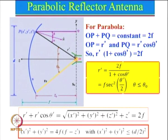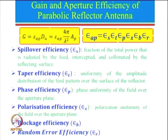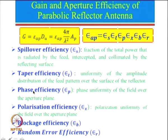In reflector antenna design, most of the time the design considerations govern spillover and taper efficiency, while fabrication tolerances directly govern the values of phase efficiency (epsilon_p) and random error efficiency (epsilon_r). Taking care of all these things allows one to design a good reflector antenna.